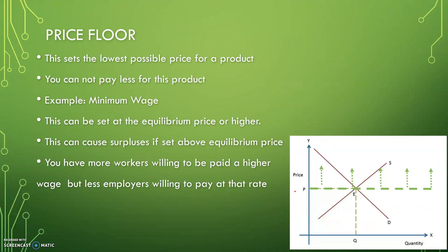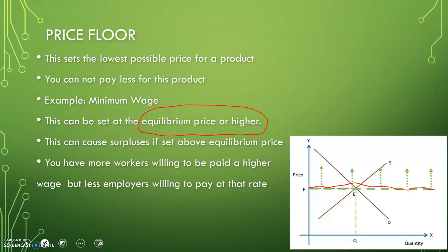Price floor is the opposite — it can be set at or above the equilibrium price, and sets the lowest possible price for a product. Minimum wage is a good example: you can't pay less for this product. This can cause surpluses if set above equilibrium price, as more workers are willing to be paid at a higher wage but fewer employers are willing to pay at that rate. The market wants to go down, but it can't, because you can't go through the floor.